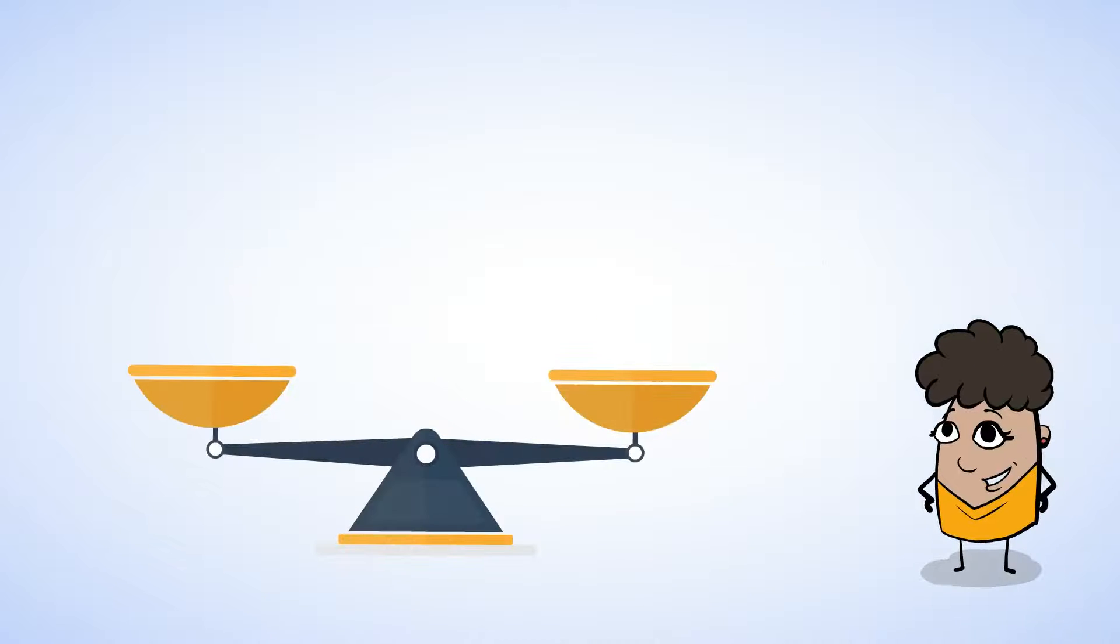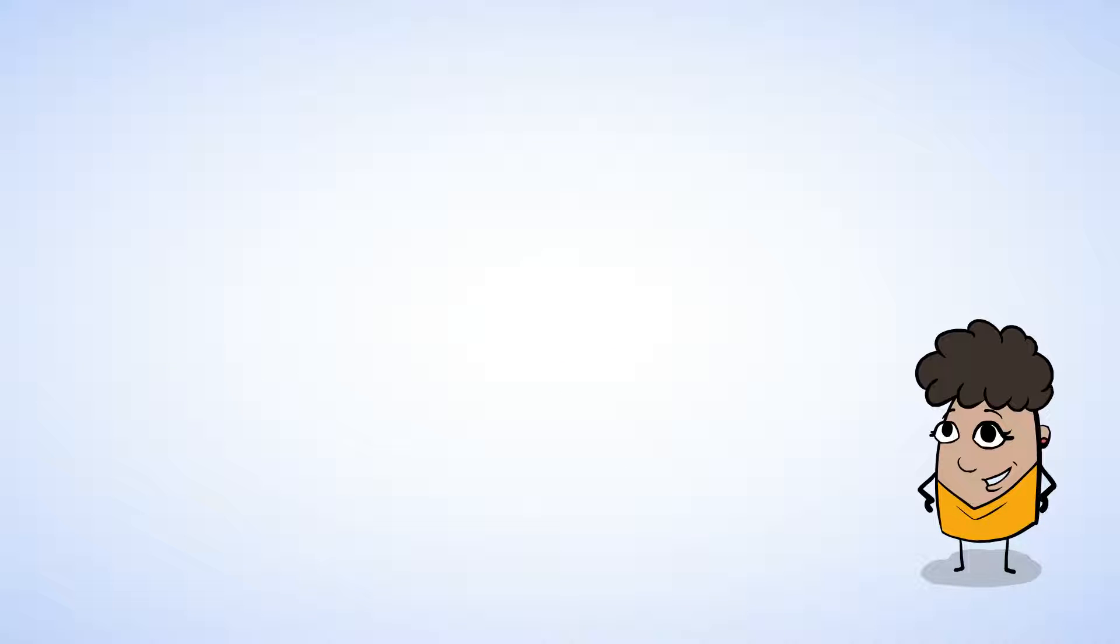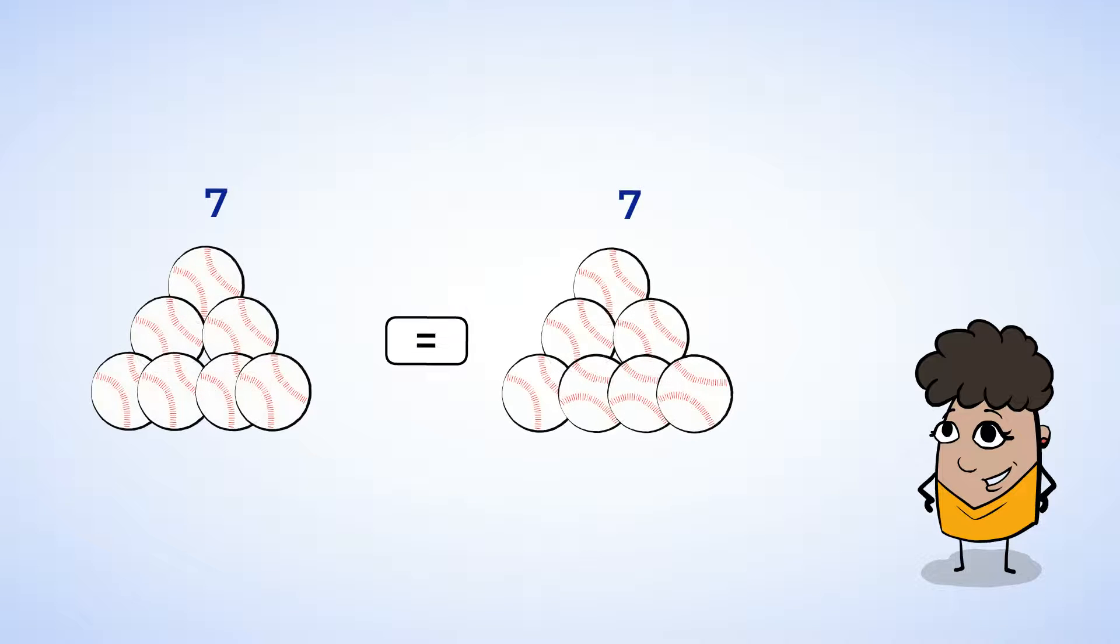Now let's make this even more interesting. Let's take away the scale, but keep the equal sign. This is the left side of the equal sign. And this is the right. Now, just like when we used a scale, both sides must be the same. For example, seven equals seven. Or seven baseballs is the same as seven baseballs.